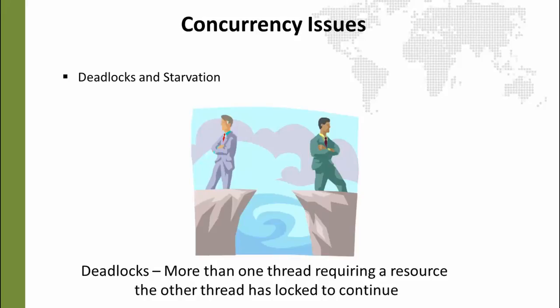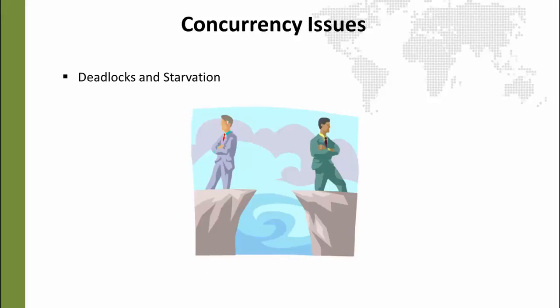A similar issue is called starvation, where thread A keeps running but thread B can never run. Thread B might try to grab a resource, and if it can't, it passes execution back to thread A. Thread A keeps going and thread B never really gets a chance to operate — it goes so slowly that it is basically being starved.